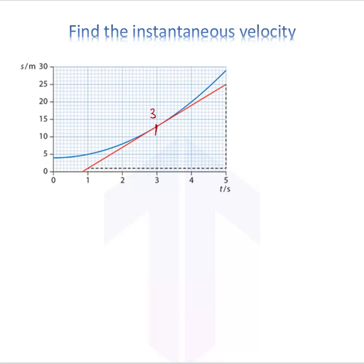The instantaneous velocity v will be the slope of the tangent, and that is the rise over run. This height is 25 minus 1, because the height above is 1, so this height is 24. And this is from 1 to 5, so this distance is 4.